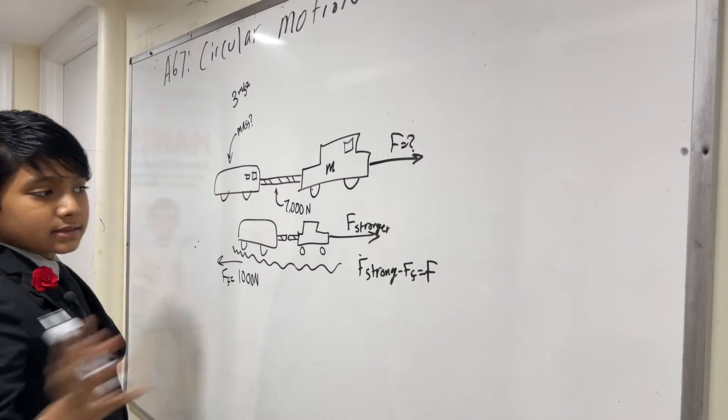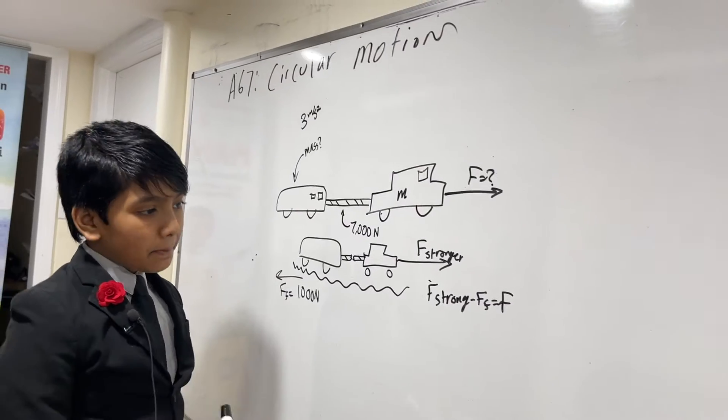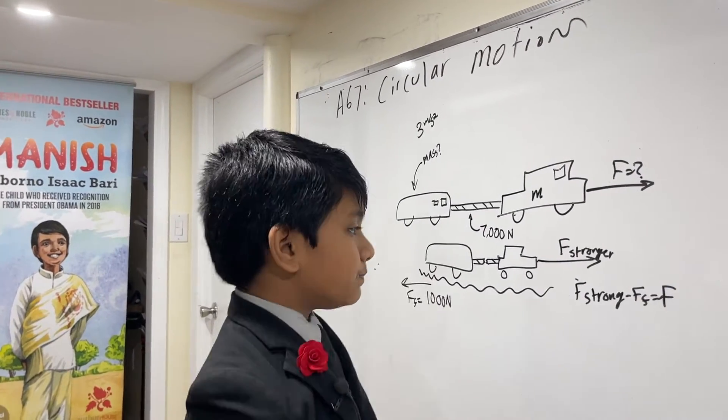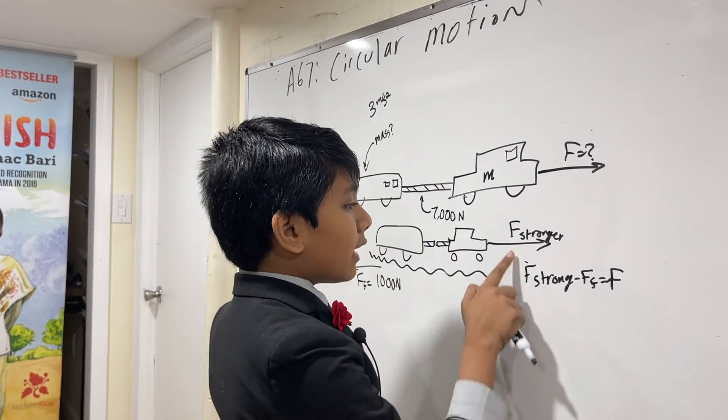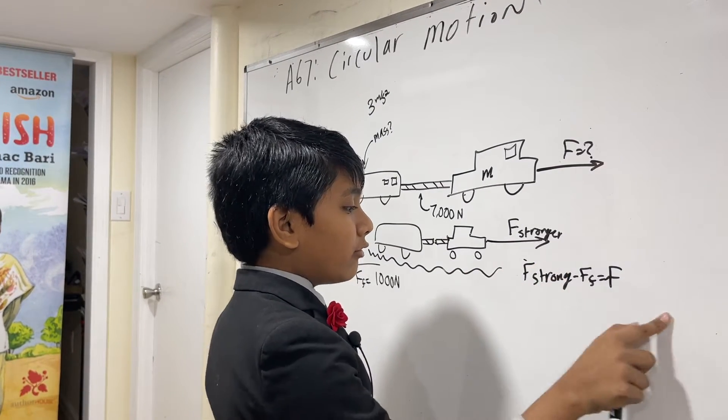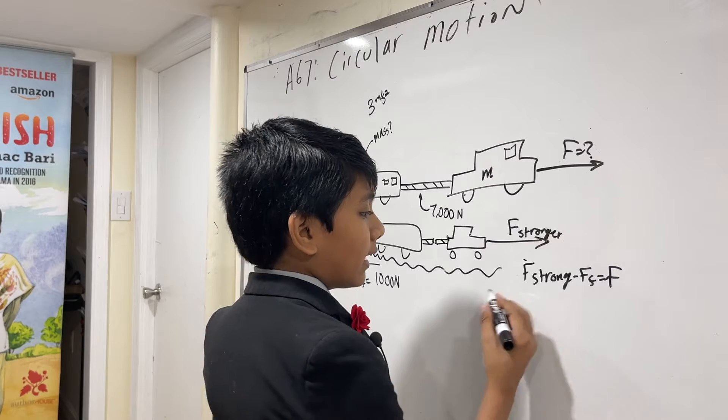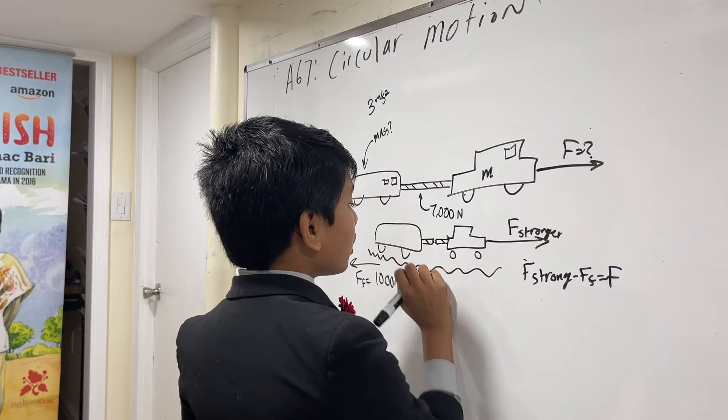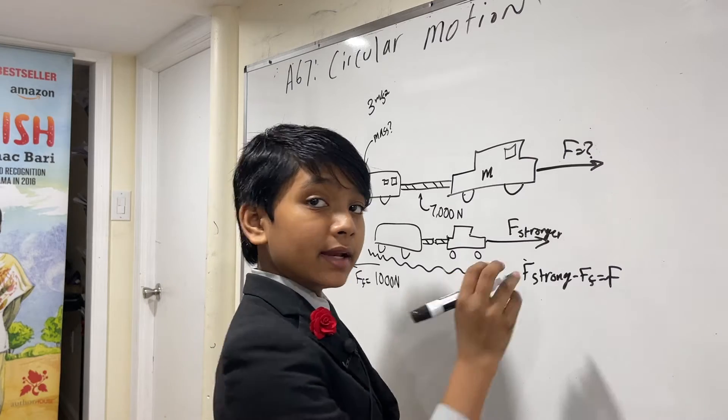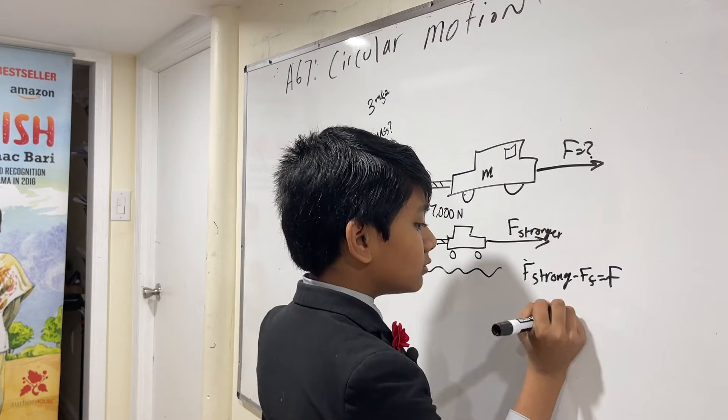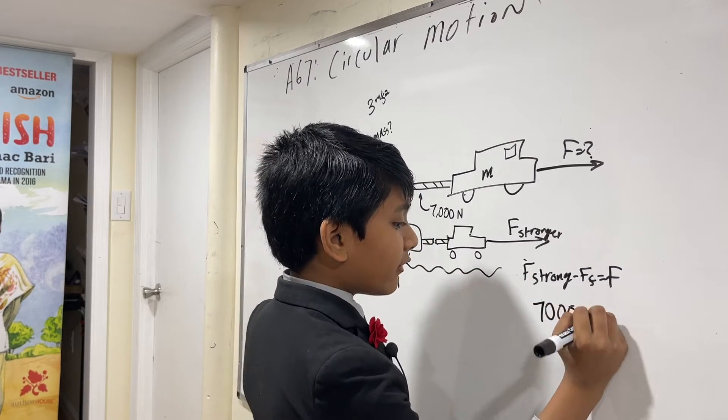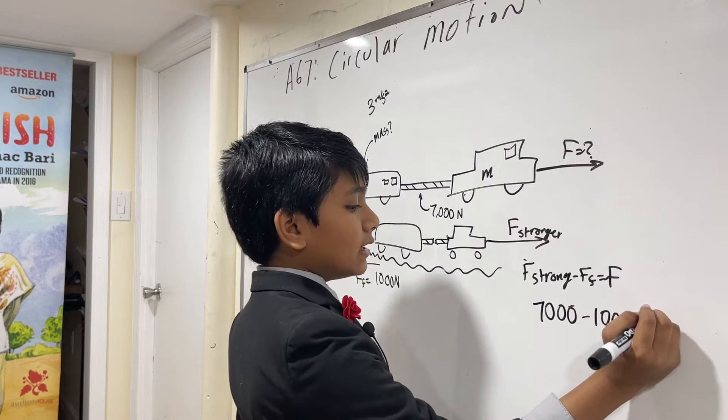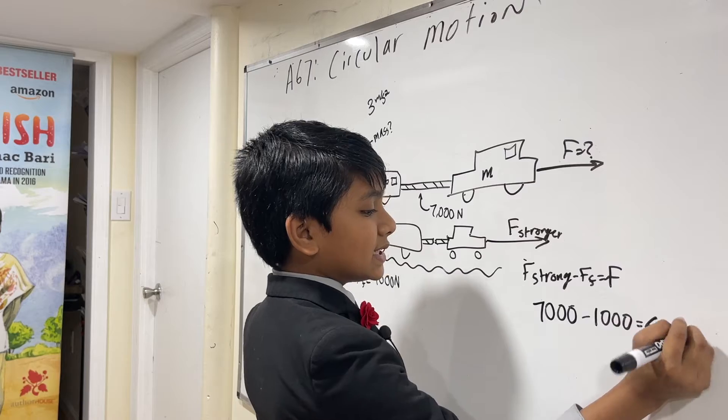So, if that happens, then what is the mass of this trailer? Well, these things seem completely unrelated, but we can actually figure this out. How? Well, you know how F stronger minus FF would be F? Well, think about that. If F stronger tore the rope apart, that means there must have been a magnitude of 7,000 newtons. Minus FF is a magnitude of just 1,000 newtons. It's equal to our original F must have been 6,000.